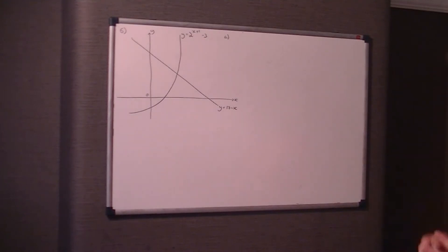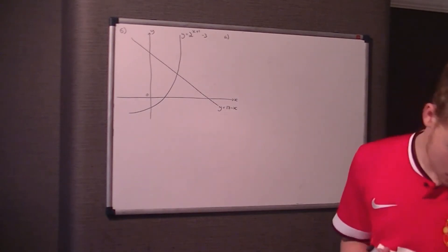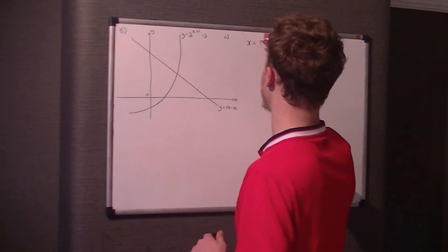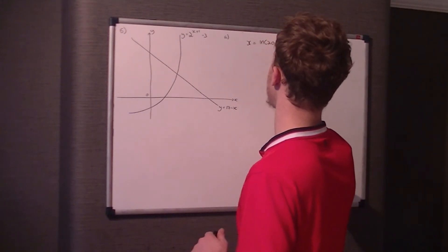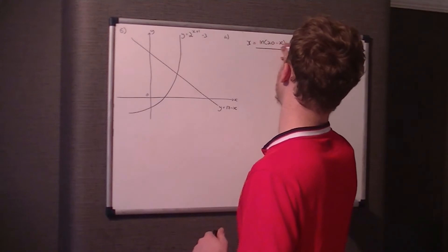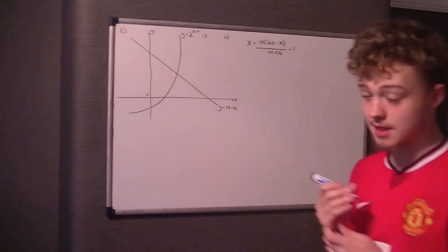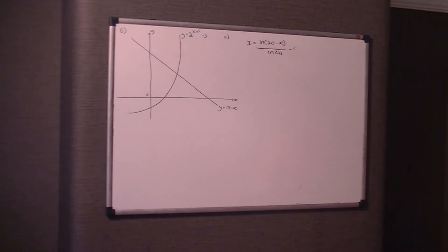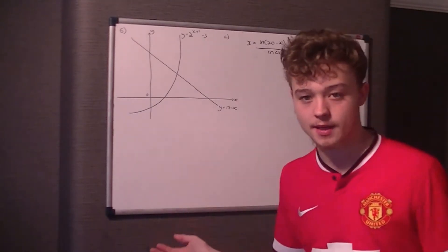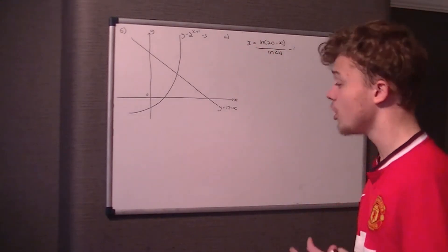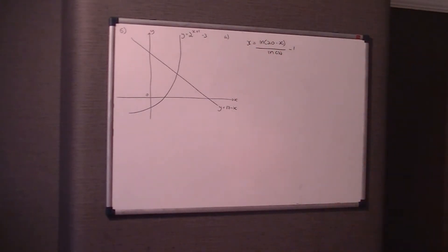And then we've got this other curve, y equals 17 minus x. The first question asks us to get x in the form x equals the LN of 20 minus x, over the LN of 2, minus 1. Now, the first thing that was springing to mind for me is, well, we don't have an e there. We have 2 to the power of x plus 1, but surely we use logs for that? I mean, come on, seriously.